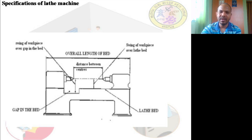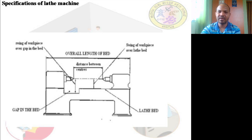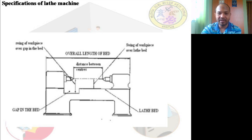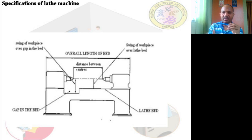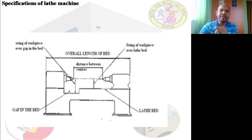The headstock is where we fix the tool, and the tailstock plays a supporting role for the workpiece. The extreme distance between the headstock and tailstock gives the overall length of the bed. The distance between the centers of the headstock and tailstock is called the 'distance between centers.' The height — the swing of the workpiece over the lathe bed — defines how large a diameter can be mounted. When rotating, the workpiece fixed in the three-jaw or four-jaw chuck must not touch the bottom plate, which is why we specify the swing over the bed.